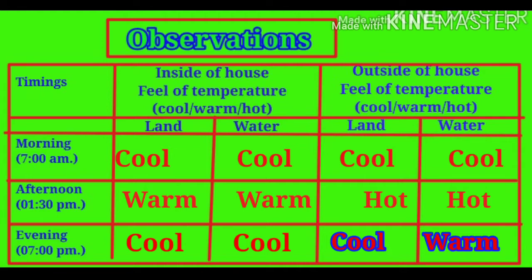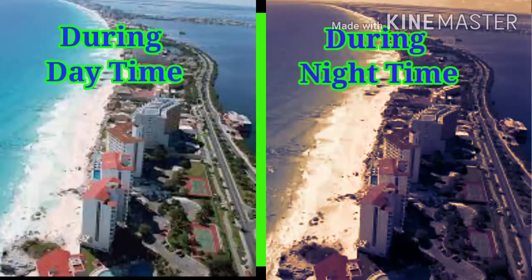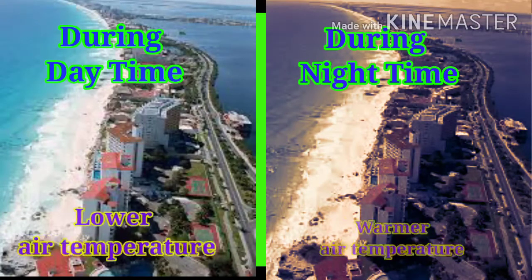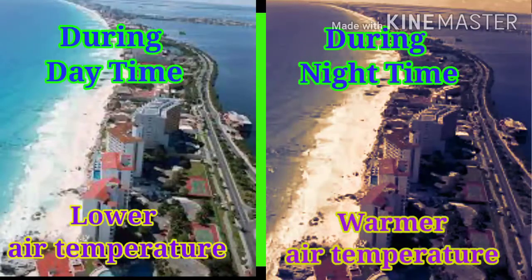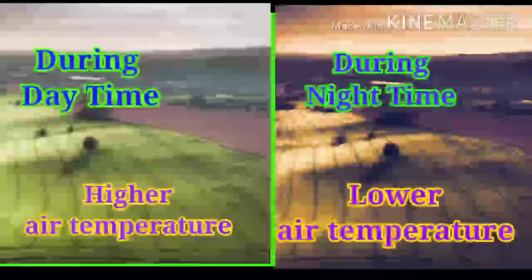Due to this difference in the heating and cooling of land and water, the air over the land gets heated faster and also becomes cooler rapidly. The air over the water gets heated slowly and also loses the heat in a slower manner. In the coastal areas, as compared to the continental areas, the temperature of air is lower during the day but warmer at night.